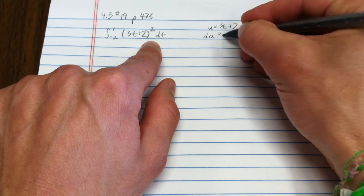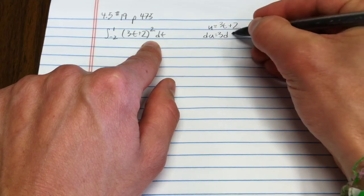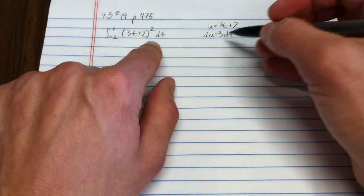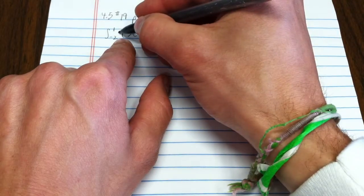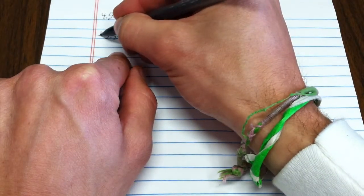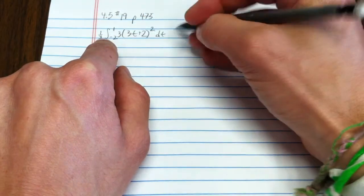Now, du, in that case, is 3 dt. Can you see that? That's the derivative there. So, I don't quite have du here, but if I had a 3 here, you can write in a 1 third times 3, that's called a clever 1.